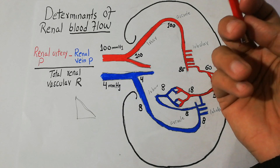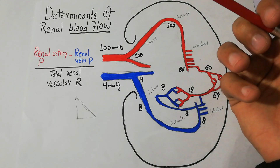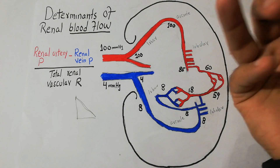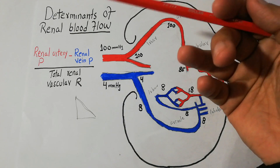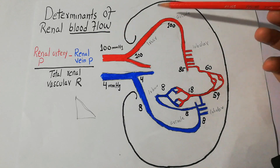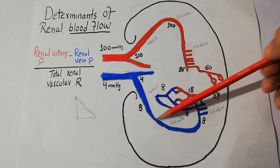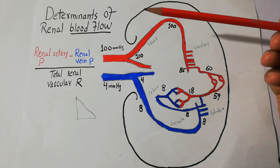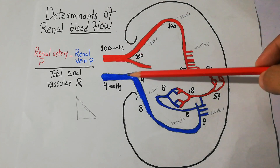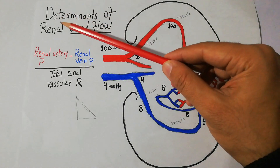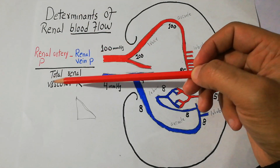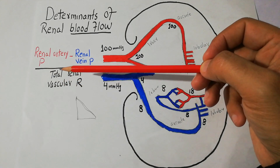As we previously discussed, the blood flowing to the kidney is very high. The amount of blood flowing to both kidneys is around 1100 ml per minute, or around 22 percent of the cardiac output. This blood not only helps in the metabolism of different cells in the kidney but also in the filtration process. Blood enters through the renal artery and leaves through the renal vein. Renal blood flow is determined by the pressure gradient divided by the total renal vascular resistance.